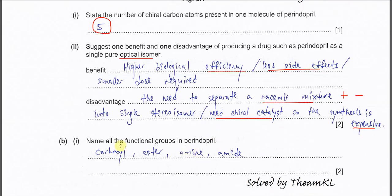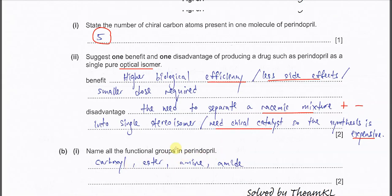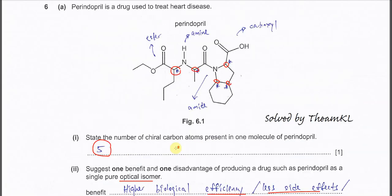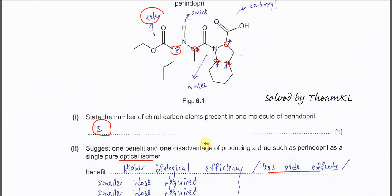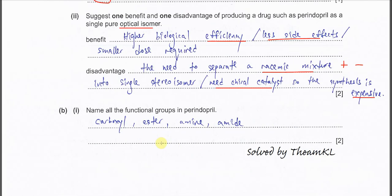Part B1: name all the functional groups in this Perindopril. First is the ester group, then amine, then amide (C-O-N-H), and carboxyl. So just four functional groups.